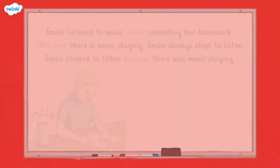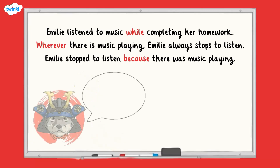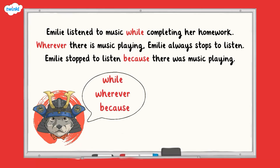Take a look at these sentences about Emily. Emily listened to music while completing her homework. Wherever there is music playing, Emily always stops to listen. Emily stopped to listen because there was music playing. In each of these sentences the conjunctions while, wherever and because are being used to express time, place or cause.